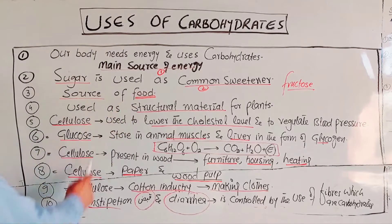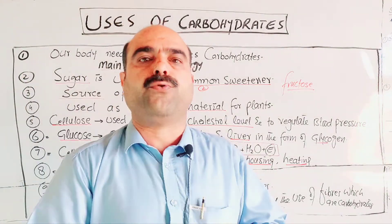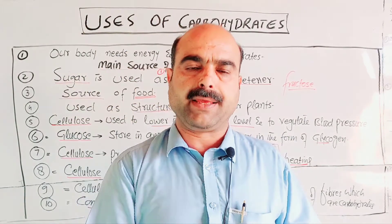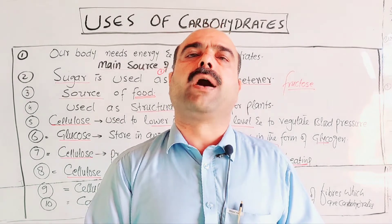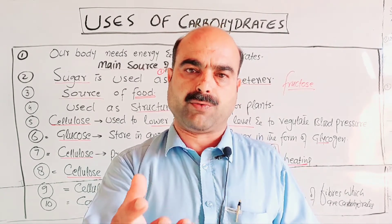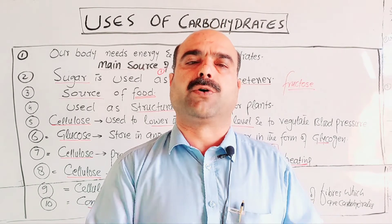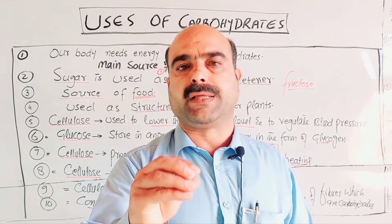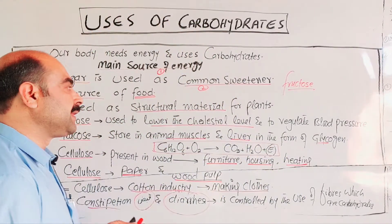Carbohydrate is the main source of food. The food grains we eat — like maize, wheat, jowar, potato, and barley — all contain carbohydrates, and these are used as food for our body's needs.